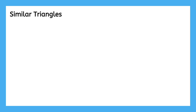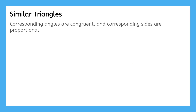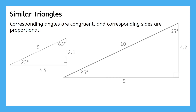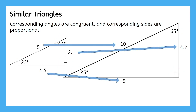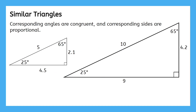Before we get started today, let's get a refresher on similar triangles. In similar triangles, corresponding angles are congruent and corresponding sides are proportional. For example, these two triangles have the same angle measurements and the corresponding sides in the second triangle are twice as long as those in the first triangle. These are similar triangles.